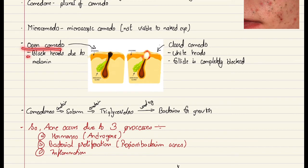Open comedo are also known as blackheads. When the comedone is not covered up by the skin, the melanin is exposed to the air and it gets oxidized, forming this black plug, and these are known as blackheads. In the case of closed comedo, also known as whiteheads, the skin covers up the blocked area and it's completely blocked by the skin, and hence these are known as whiteheads.